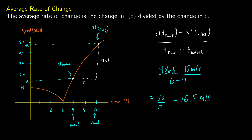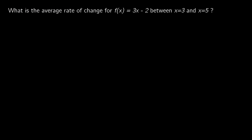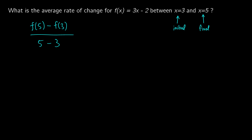Now let's look at a couple of example problems — this time we won't see graphs but just functions instead. What is the average rate of change for f of x equals 3x minus 2 between x equals 3 and x equals 5? So x equals 3 is our initial point and x equals 5 is our final point. To calculate the average rate of change we take f of our final point minus f of our initial point and divide by the final point minus the initial point: f of 5 minus f of 3, over 5 minus 3.